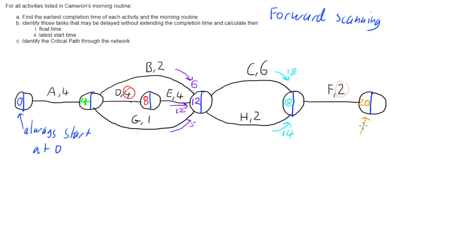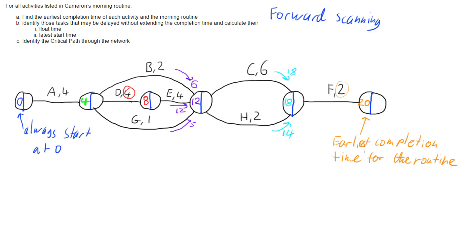Twenty minutes is the earliest completion time for everything - in this case our morning routine, or project as the case may be. There should be an E for earliest completion time for the routine. So that gets us part A. We've now got the earliest completion time for each activity and for the entire morning routine. Each of these numbers along the way is the earliest completion time for each activity.